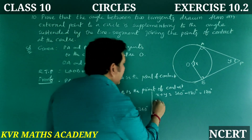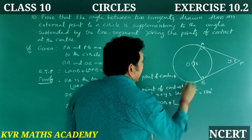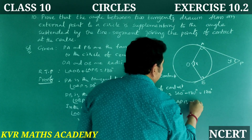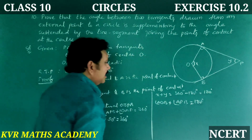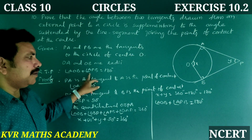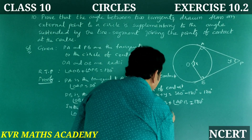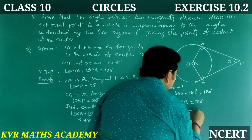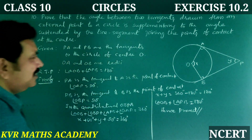Therefore, angle AOB plus angle APB is equal to 180 degrees — they are supplementary. In quadrilateral OBPA, angle AOB plus angle APB equals 180 degrees. Hence proved. Have you understood clearly?